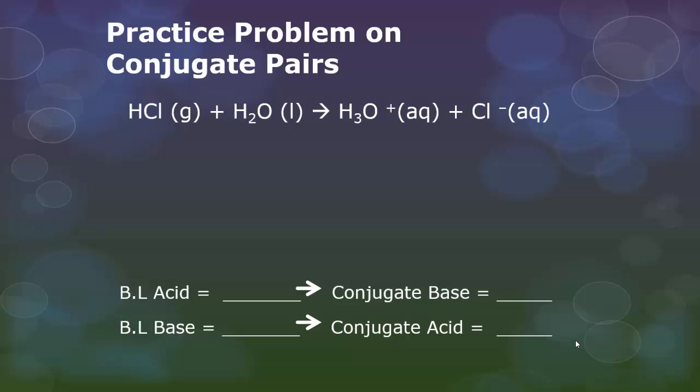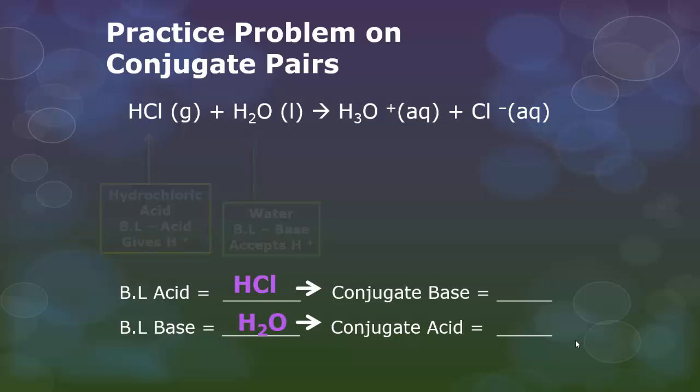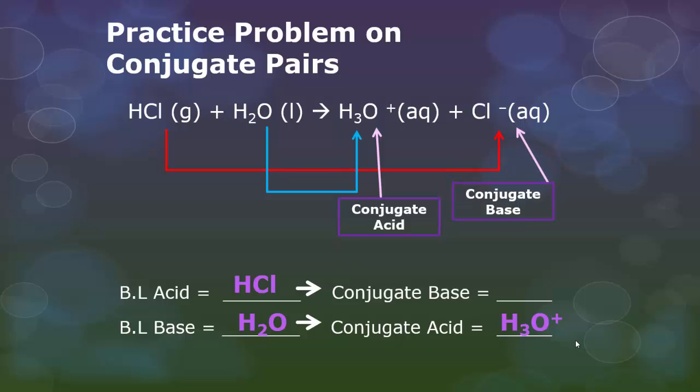Again, let's try this problem. Now we have hydrochloric acid plus water giving you hydronium and a chloride ion. Pause the video, try it on your own. So we're noticing that our hydrochloric acid gives up a proton. We're noticing that that water accepts a proton. Therefore, when you're looking at the changes and how they occur, we can say that our conjugate acid is going to be H3O because it gained a hydrogen ion. And our conjugate base, the thing that lost the hydrogen ion, is going to be our chloride ion.